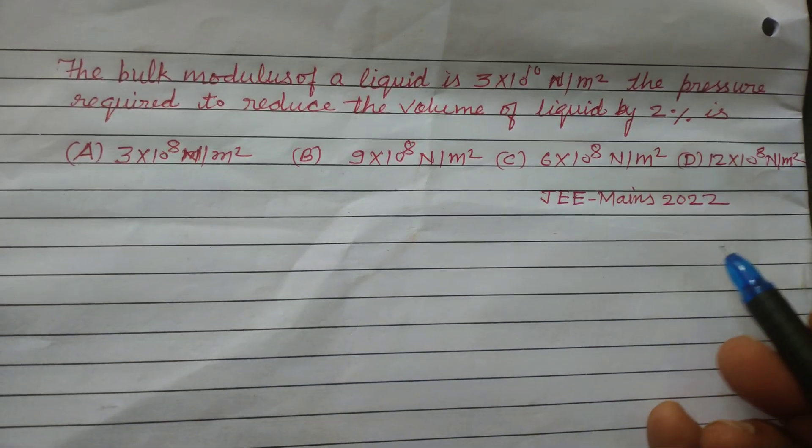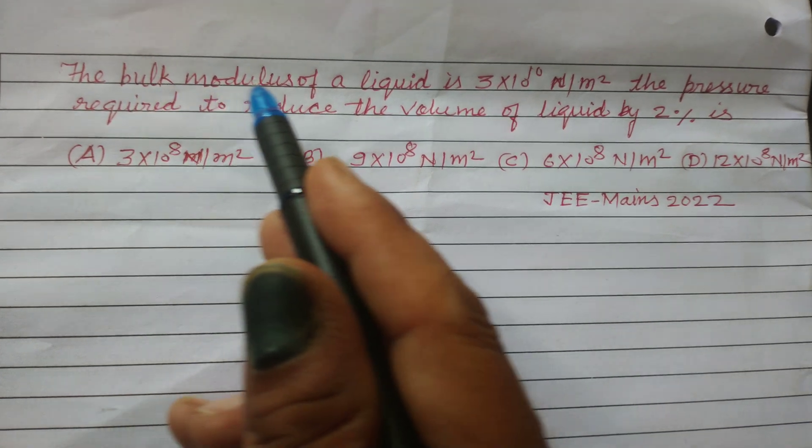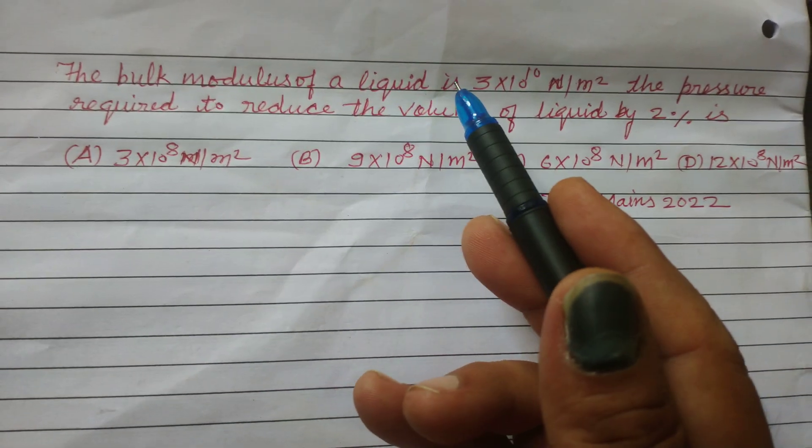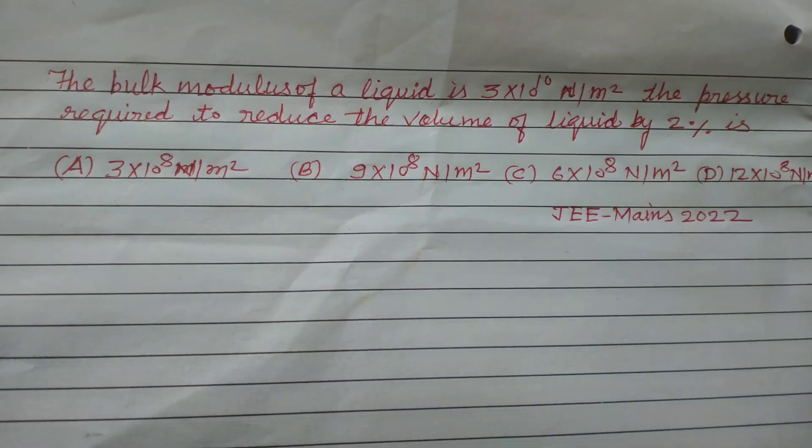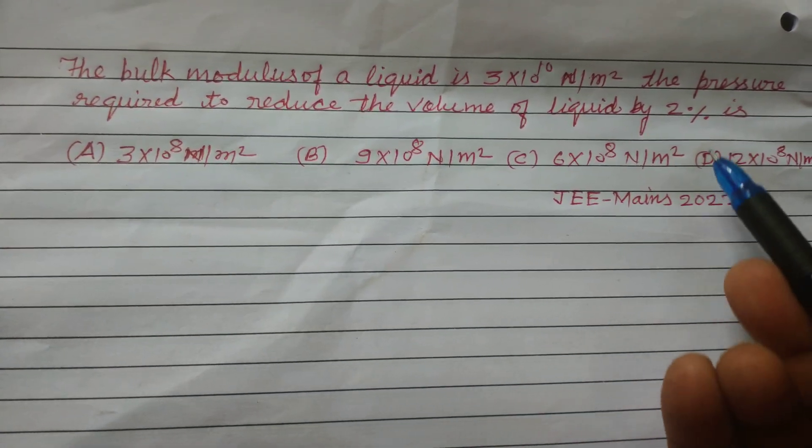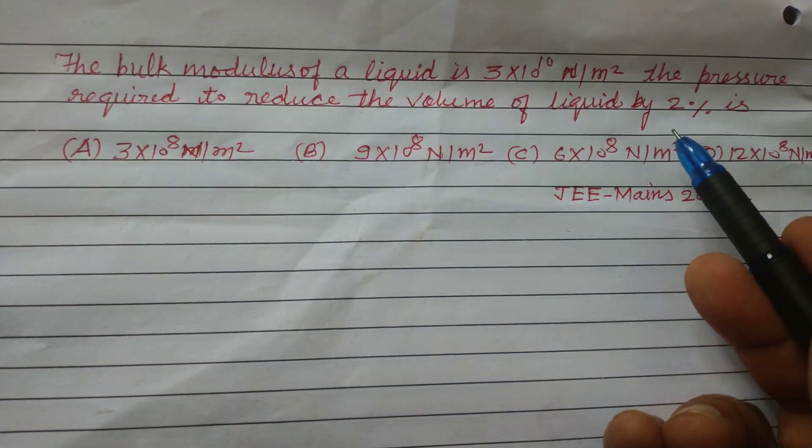Hello student, JEE Main 2022, Physics, Question A. The bulk modulus of a liquid is 3 × 10^10 N/m². The pressure required to reduce the volume of liquid by 2% is...